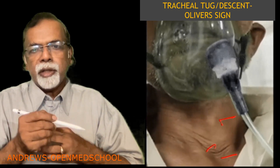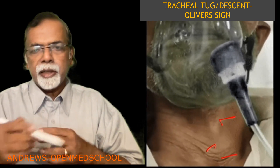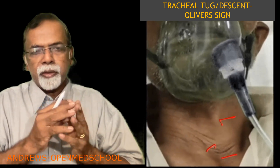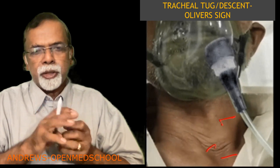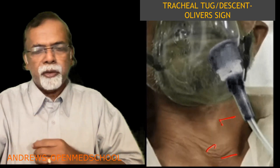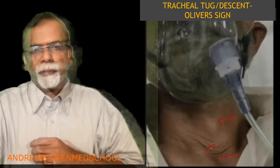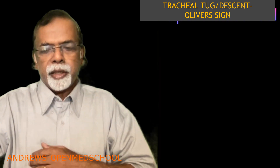Here it is very well seen. When the patient is breathing in, we can see that the trachea descends. This is one of the very definite evidence of obstructive airway disease with advanced hyperinflation. So this sign is called Oliver's sign or the tracheal tuck sign.